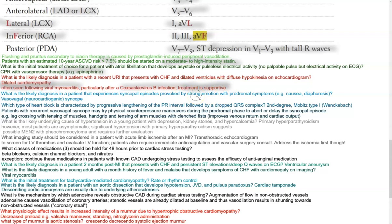What is the likely diagnosis in a patient that experiences syncopal episodes provoked by strong emotion with prodromal symptoms like nausea and diaphoresis? That would be vasovagal or neurocardiogenic syncope. Which part of heart block is characterized by progressive lengthening of the PR interval followed by a dropped QRS complex? That would be second degree heart block, Mobitz type 1. If the PR interval is prolonged, it's Mobitz type 1; if it's a random dropped beat without a prolonged PR interval, that's Mobitz type 2.